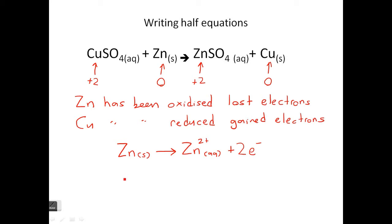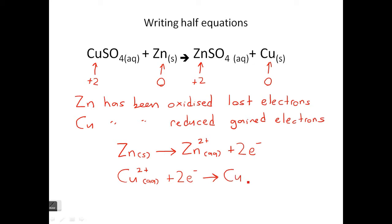Now let's look at the copper. The copper started with Cu²⁺ in aqueous solution. It's gained electrons. How many electrons has it gained? Well, it went from 2 plus down to 0, so it's gained two electrons — 2e⁻. Then you put the copper as a solid on the right side.